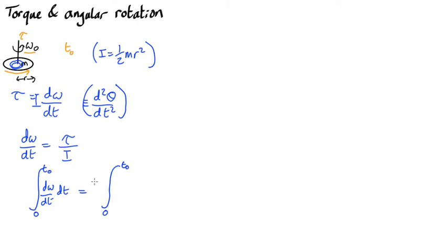Tau and I are both constants, so they go outside the integral. So it's just dt. So this integral over here is just omega, so we get omega from 0 to t0,